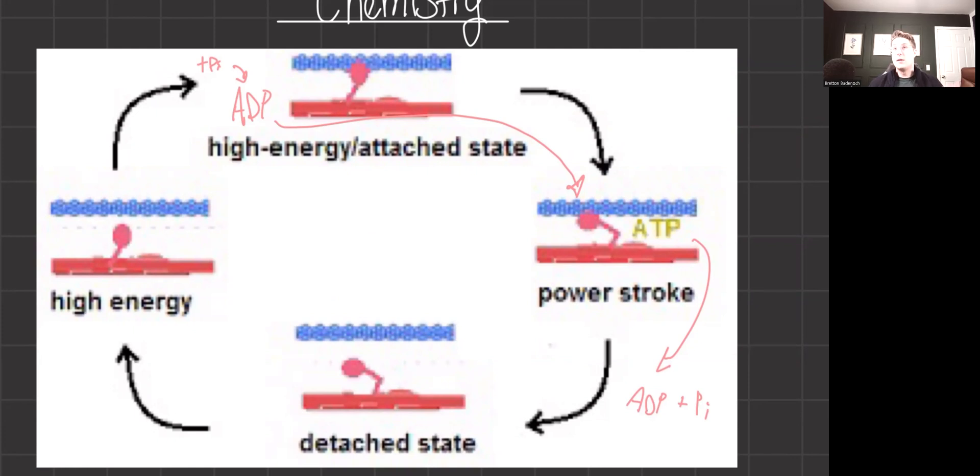So when we run out of ATP, this is why people go into rigor mortis, because they use up all the ATP and we're only left with ADP. This leaves us in that high energy attached state. All of the muscles are tensed up.